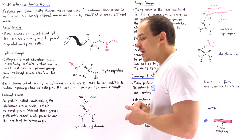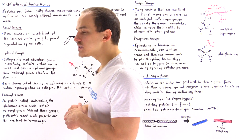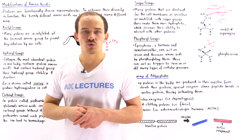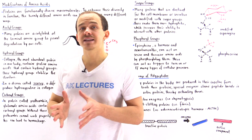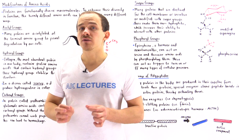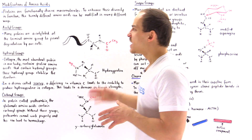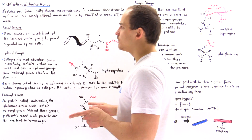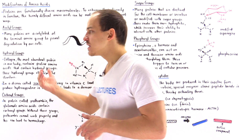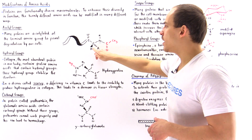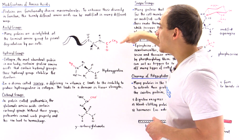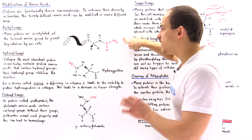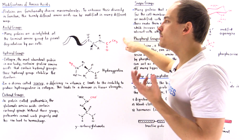The majority of polypeptides and proteins inside our body are actually modified by the addition of acetyl groups. This tells our cells not to break down and degrade those polypeptides. Many proteins are acetylated at the terminal amino group to prevent degradation. The nitrogen at the beginning of our polypeptide is modified by adding this acetyl group, which prevents the polypeptide from being broken down.